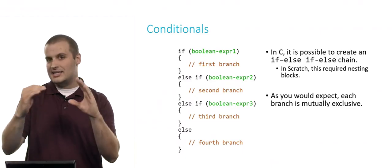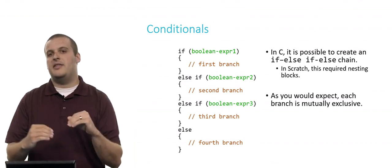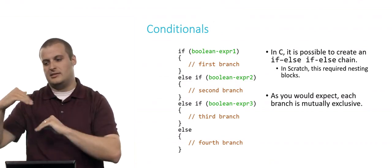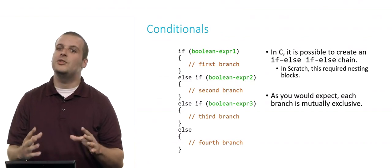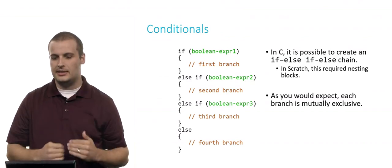In C, it's possible to create an if, else if, else chain. And in fact, you can have if, else if, else if, else if, and so on and so on. In Scratch, this required nesting the blocks. You had an if else, and then you had to put another one inside of the else, and so on. And it got kind of nested and complicated. But in C, we don't have to do that. We can actually just have it be a chain like this.